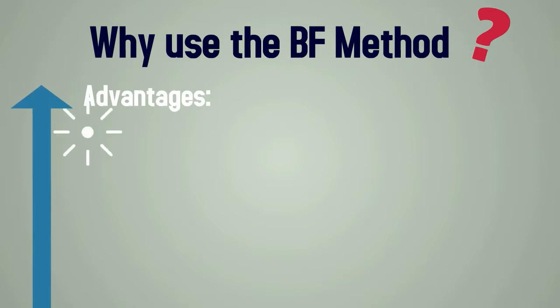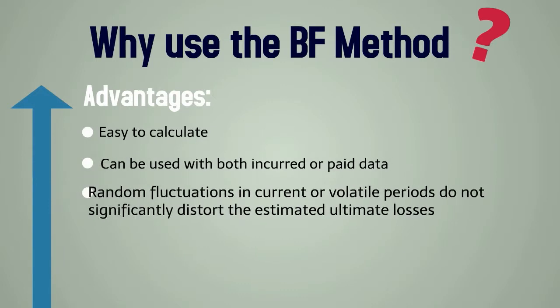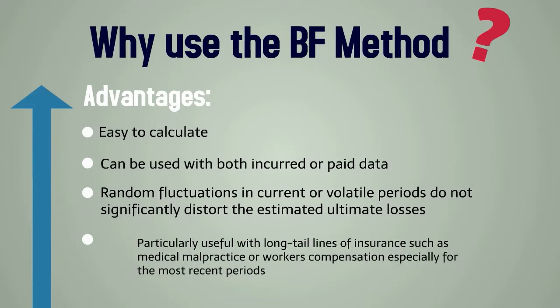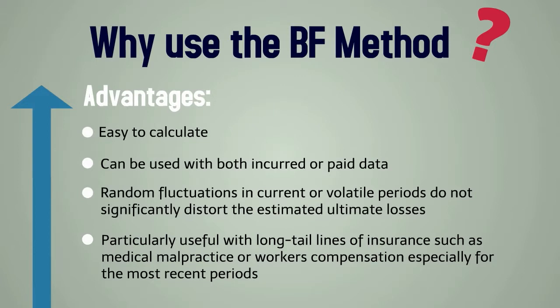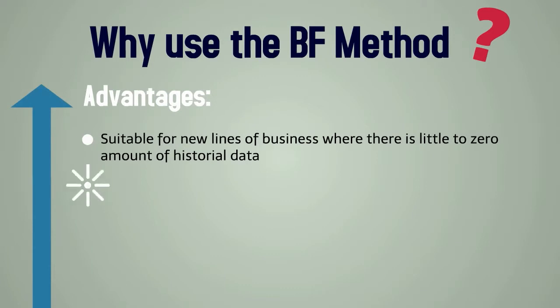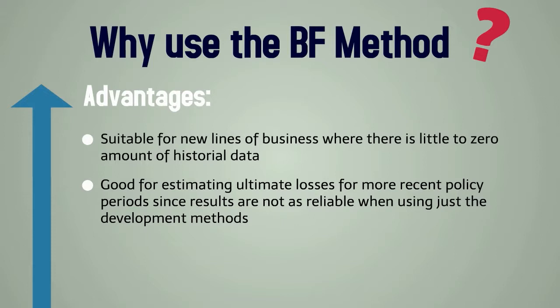There are several advantages to this method. First, it's easy to calculate. Next, it can be used with both incurred or paid data. Random fluctuations in current or volatile periods do not significantly distort the estimated ultimate losses, making it particularly useful with long-tail lines of insurance such as medical malpractice or workers' compensation, especially for the most recent periods. It's suitable for new lines of business where there's little to zero historical data, and it's a good method for estimating ultimate losses for more recent policy periods since results are not as reliable when using just the development methods.